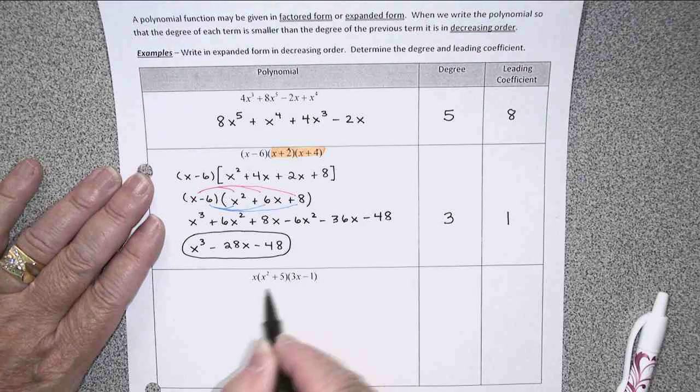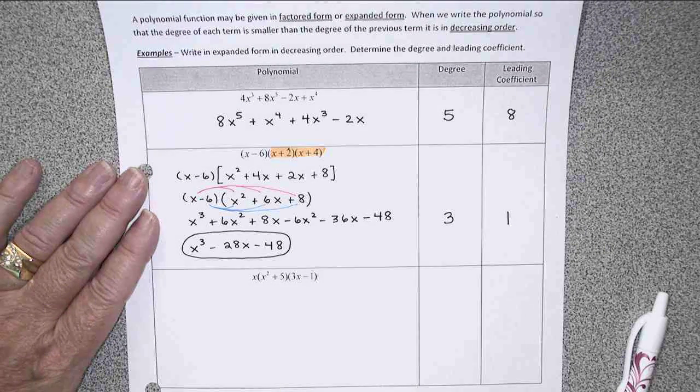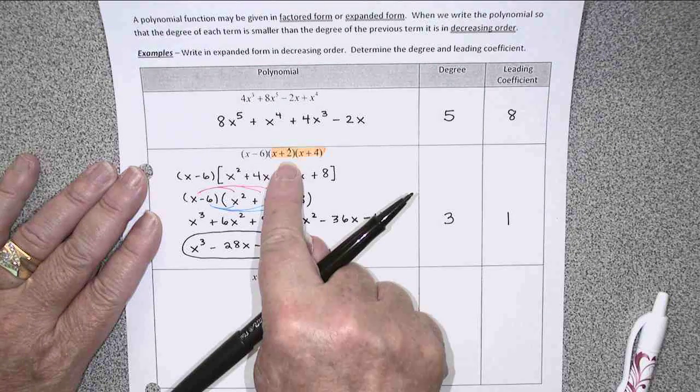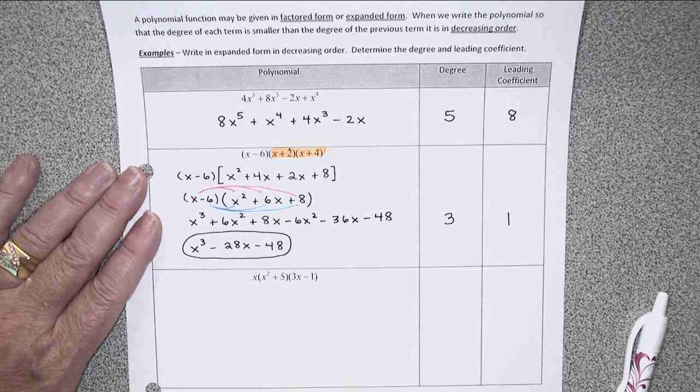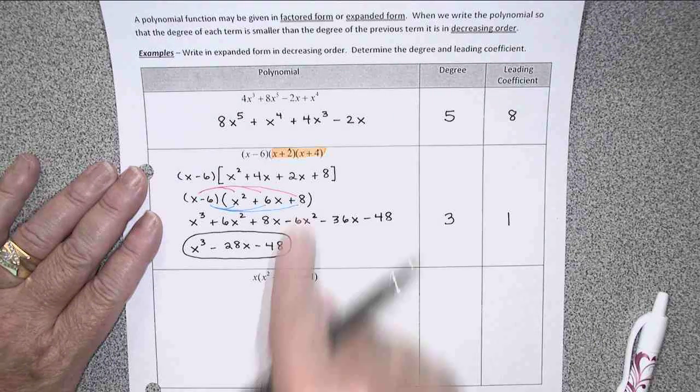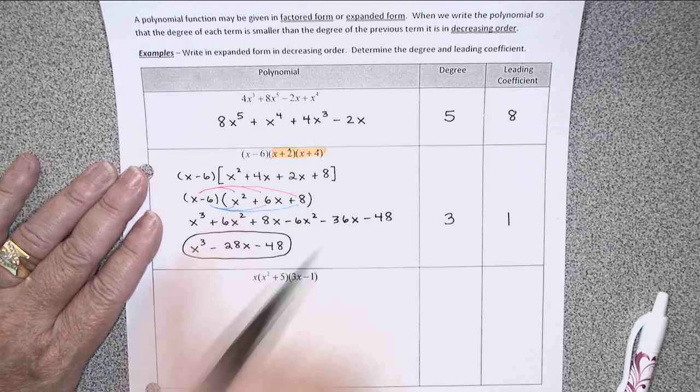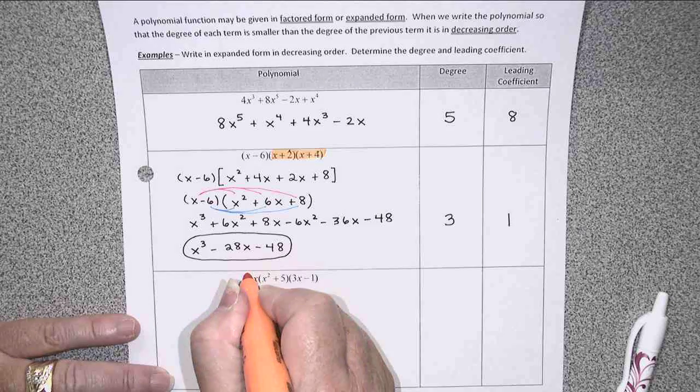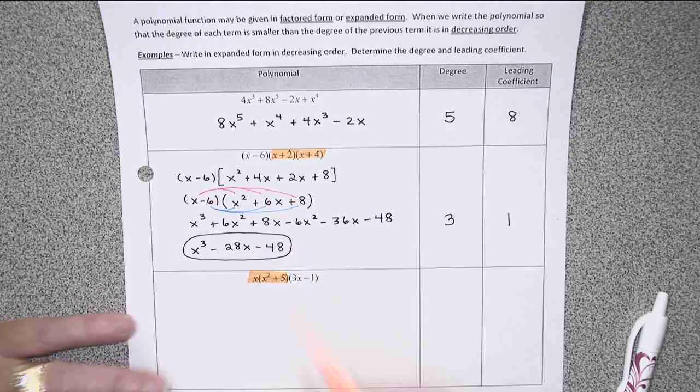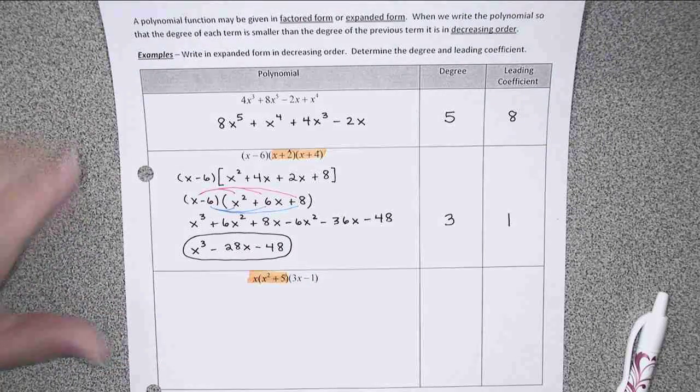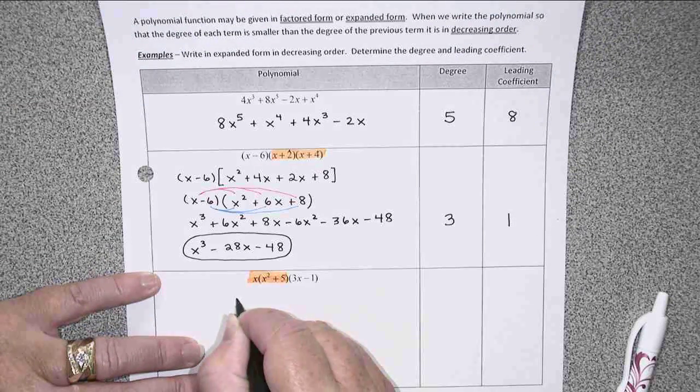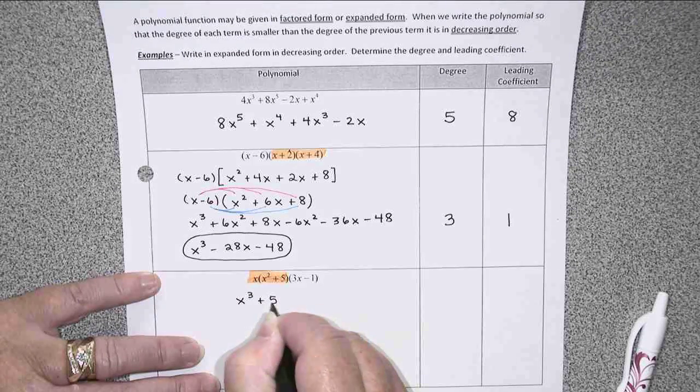There's one more example here: x times x squared plus 5 times 3x minus 1. Last time, I chose to multiply the last two multipliers together first, and I can do that again here. That choice was really arbitrary. I could have multiplied the first two first. It would not have mattered. Just to mix it up a little, let's do the first two multipliers first this time. So here I have to distribute this x, and I'm going to get x cubed plus 5x.